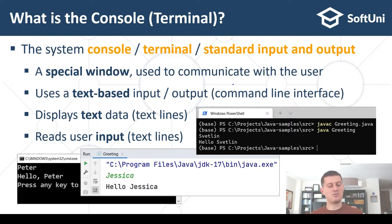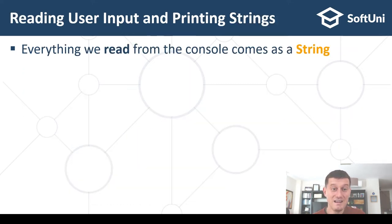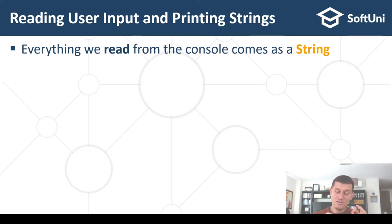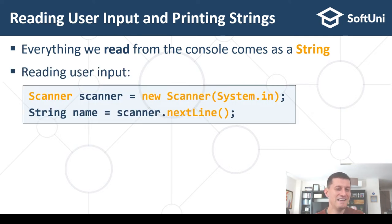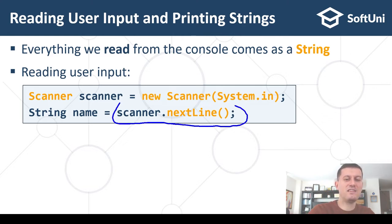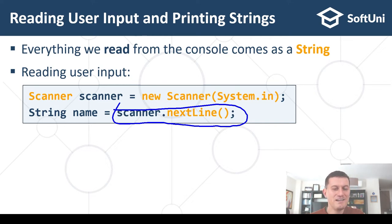Generally the console is an interface based on commands — you ask something, the program answers; you ask something else, the program answers again. Let's see how this works in Java — how we can read input and print strings. First, one concept: everything we read from the console comes as a string, as text data.